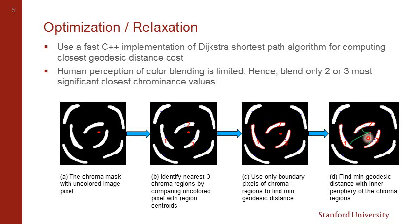Finally, instead of calculating the geodesic distance for all boundary pixels, we sample the inner periphery of the regions and take only 4 to 5 pixels at a regular interval in the calculation of minimum geodesic distance for the uncolored pixel. Using these approximations, we were able to reduce computation time and still achieve decent results.